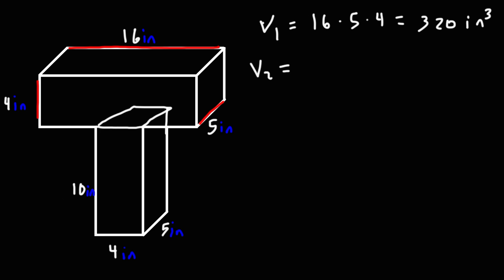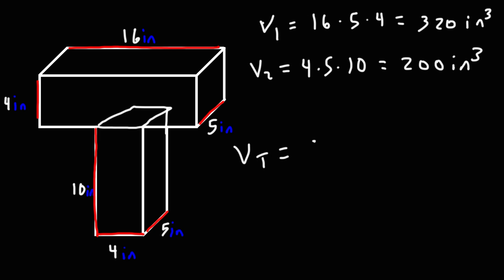Now for V2, we can see that we have a length of 4, a width of 5, and a height of 10. So length times width times height: 4 times 5 is 20, times 10, that's going to be 200. So 200 cubic inches. If we add 320 and 200, we'll get a total volume of 520 cubic inches.